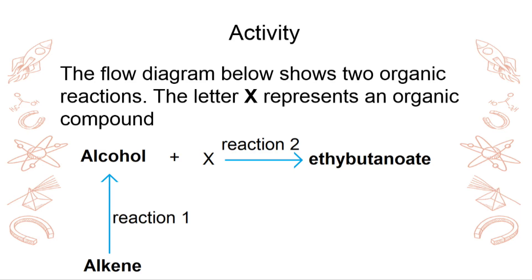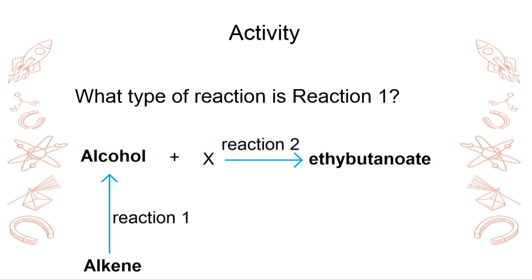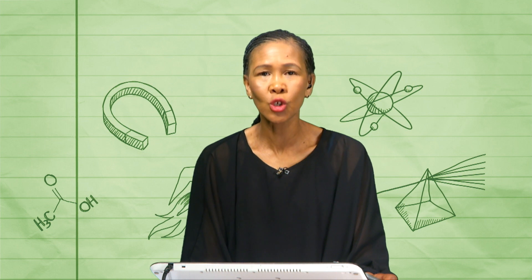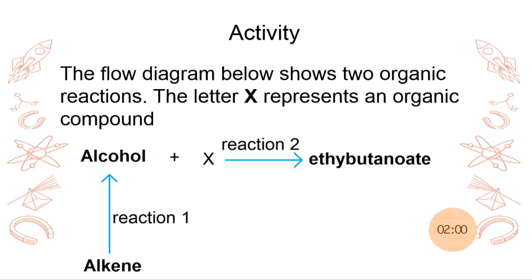For us to check if you understand, let's have a look at the activity. We've got a flow diagram showing two organic reactions. The letter X represents an organic compound. Question: What type of reaction is reaction 1? What are the conditions needed to form an alcohol from an alkene? Have a look at that, and I'll give you two minutes starting right away.